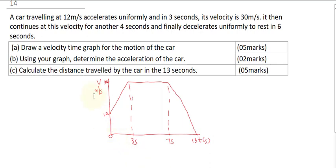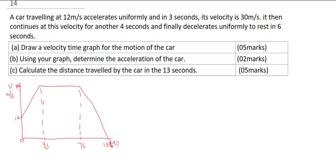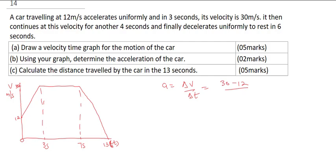Having seen our graph, we are now going to solve for B: using your graph, determine the acceleration of the car. Recall that acceleration equals change in velocity over change in time. It moved from velocity 12 to 30, so the change is 30 minus 12, all divided by the change in time, which is 3 minus 0. This gives us 18 over 3, which equals 6 meters per second squared.